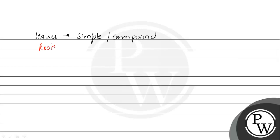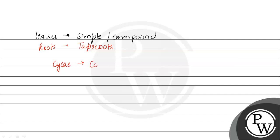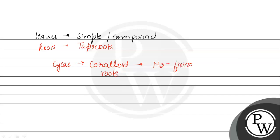The root system is very important here. The roots are tap roots. A special feature seen in roots - for example in Cycas, there are coralloid roots present. Coralloid roots means these roots are in association with nitrogen-fixing bacteria.